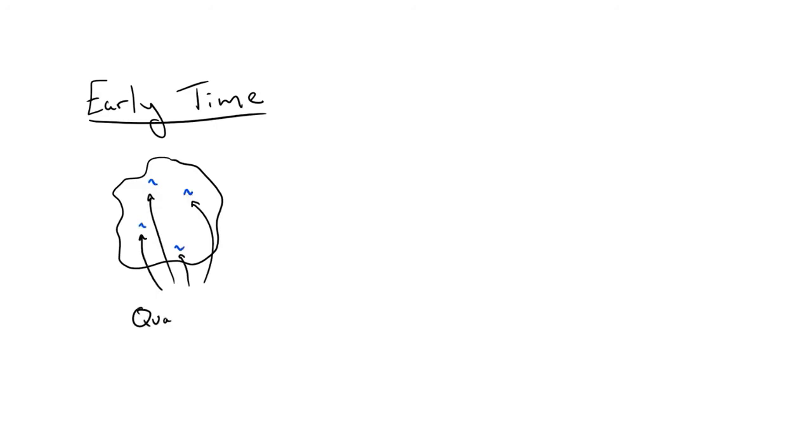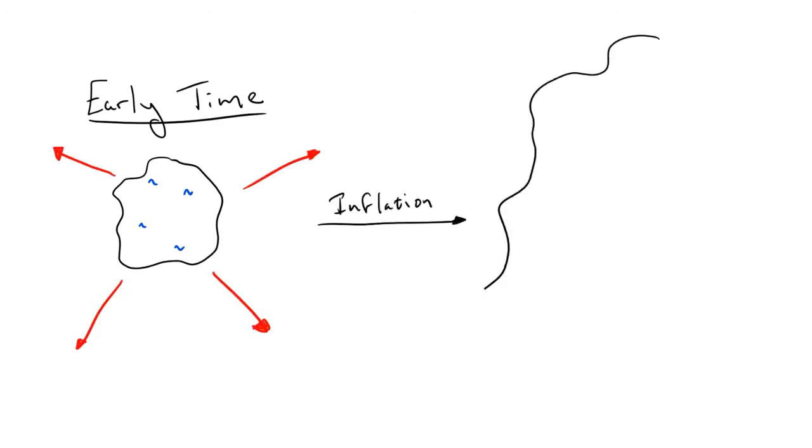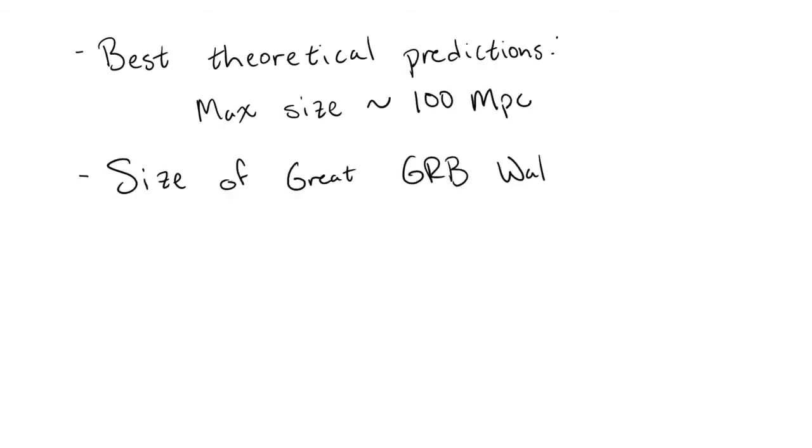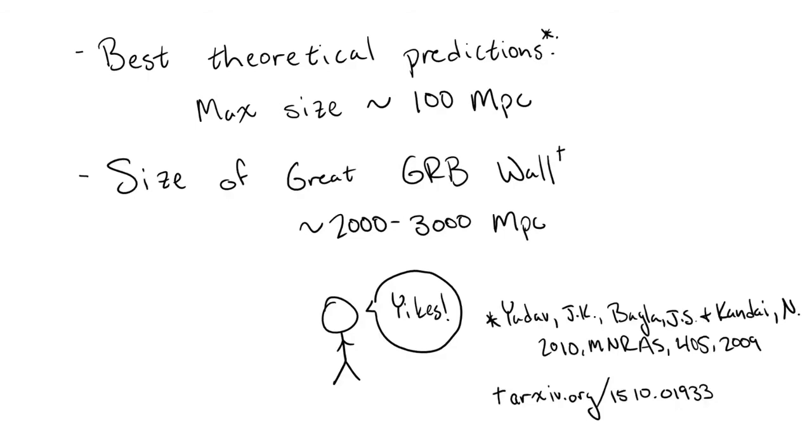During this time, quantum fluctuations created tiny spots of non-uniformity. Then, the universe went through a period of rapid inflation, stretching these small fluctuations into the galaxies and clusters we see today. However, if the Cosmological Principle is correct, these fluctuations, and thus the corresponding large-scale structures, shouldn't be too large. The Great GRB Wall is about ten times the most well-accepted theoretical predictions, and so it seems to contradict the Cosmological Principle. But this isn't the end of the story.